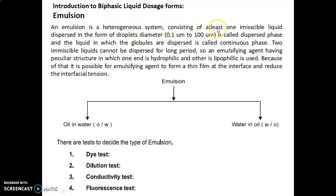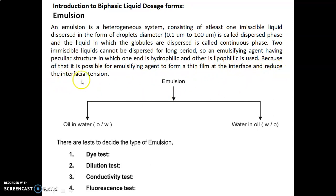An emulsion is a heterogeneous system consisting of at least one immiscible liquid dispersed in the form of droplets with diameter 0.1 micrometer to 200 micrometer, called the dispersed phase. The liquid in which the globules are dispersed is called the continuous phase. Since the two immiscible liquids cannot be dispersed for a long period, an emulsifying agent — having one hydrophilic end and one lipophilic end — is used. This allows the emulsifying agent to form a thin film at the interface and reduce the interfacial tension.